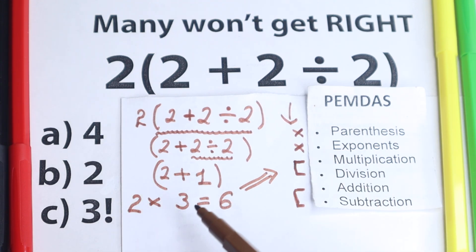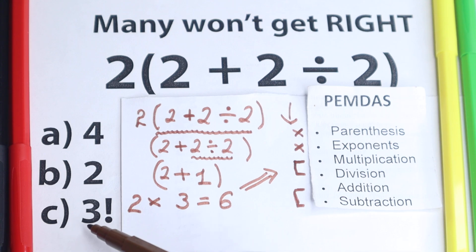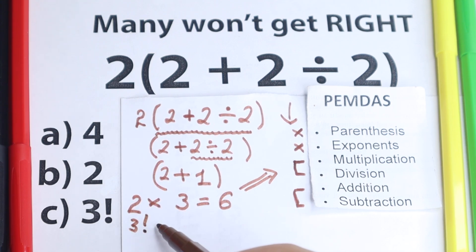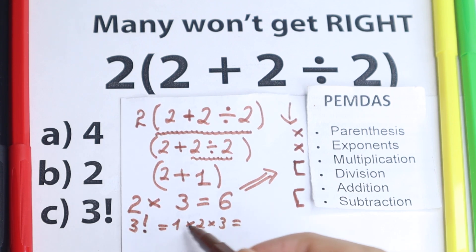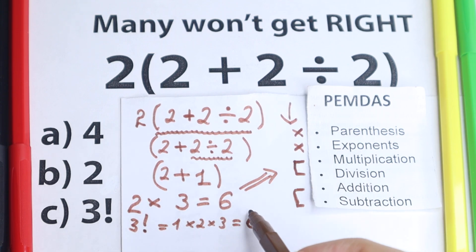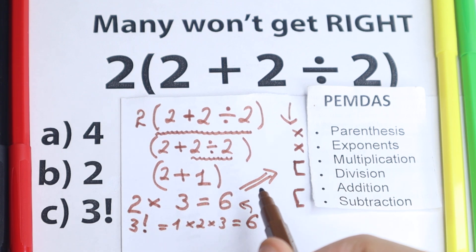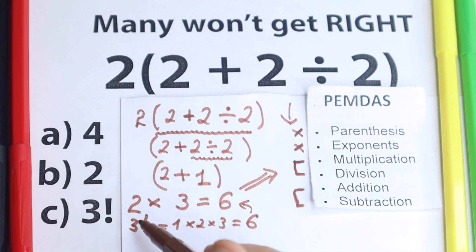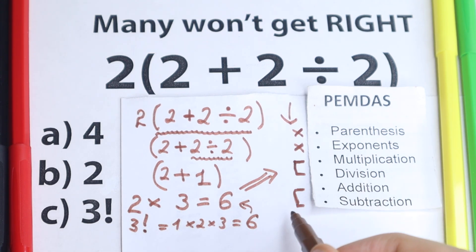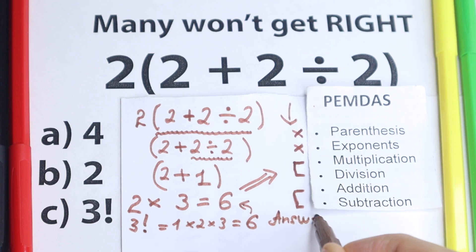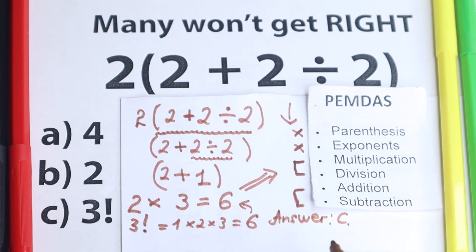Let's look at the options: Option A is 4 — not our case. Option B is 2 — not our case, since we solved it as 6. But option C is a really interesting one: we have 3 factorial. From school you need to know that 3 factorial is the product from 1 to 3 — 1 times 2 times 3 equals 6. So 3 factorial equals 6, which is exactly our answer. This was created as a tricky question — 3 factorial is the same as 6. So our correct answer is option C.